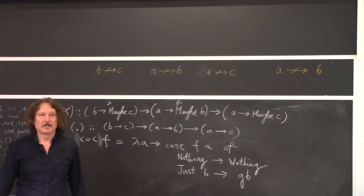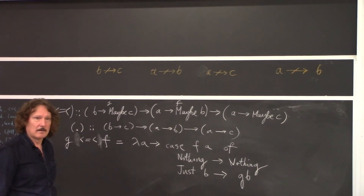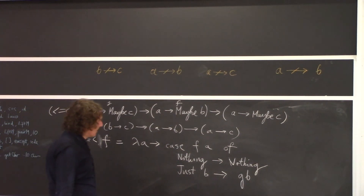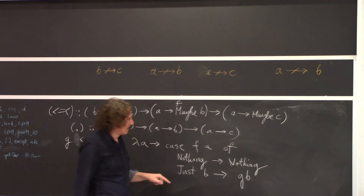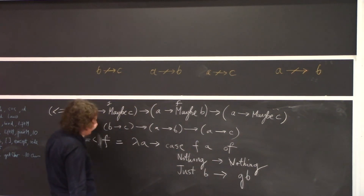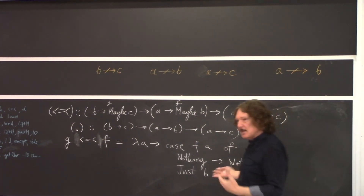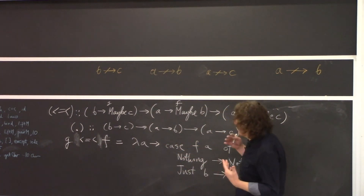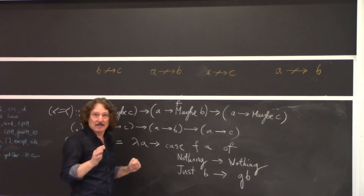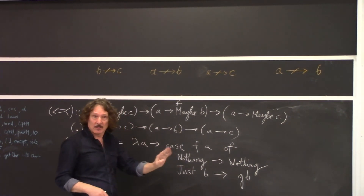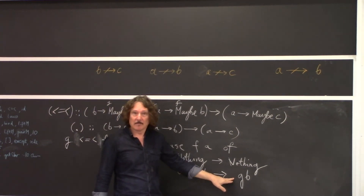This is our implementation of the fish operator. Note that G returns a Maybe, so we don't need to wrap it again — it might itself return Nothing, and that's fine. The failure may occur in two places: if F fails, we don't call G and return Nothing. If F succeeds but G fails, G will return Nothing. Both failure points are handled.